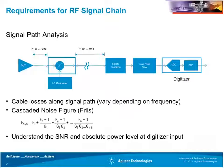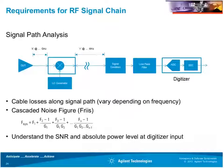I'll also talk about the RF signal chain in front of the digitizer and what's required for measurement accuracy. What's really important to understand is the contribution of this signal chain in terms of noise figure and gain to the signal passing from the antenna into the digitizer. If you've characterized these individual elements, you can calculate the cascaded noise figure using the Friis equation. Knowing this helps you understand the signal-to-noise ratio and absolute power at the digitizer's input ports.